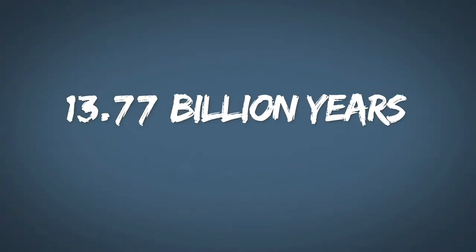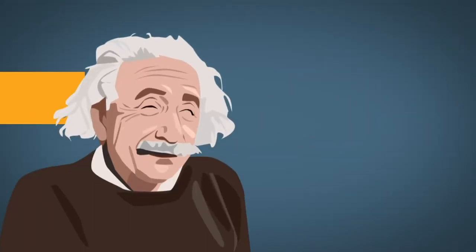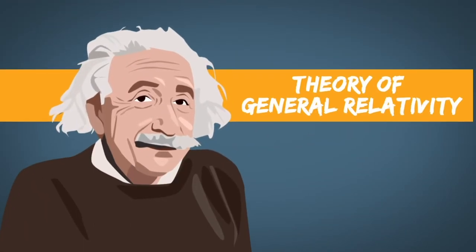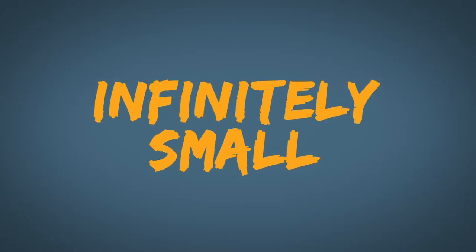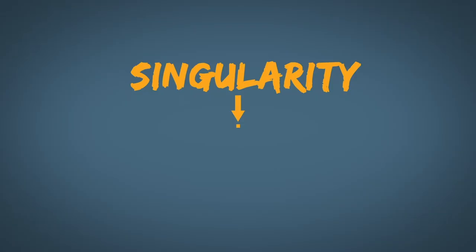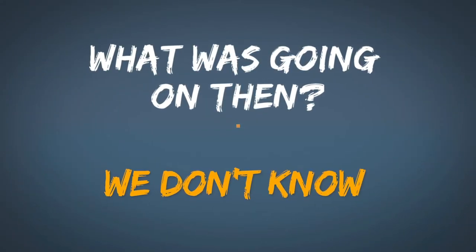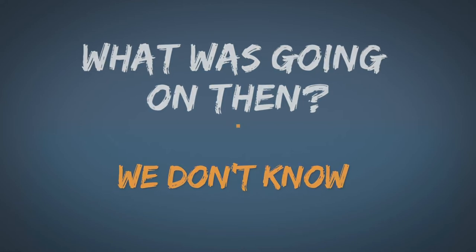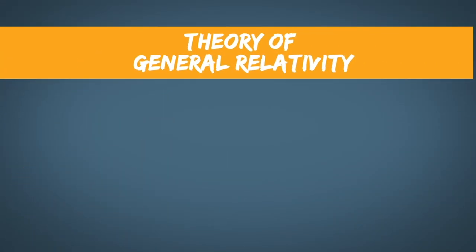But 13.77 billion years since what? Since the beginning? Well, in general relativity, at a certain point, 13.77 billion years ago, it was so small, it was infinitely small. Our entire universe was just an infinitely tiny point, something we call the singularity. But what was actually going on then? We don't know. Because at the singularity at that point, general relativity, which is our model of how we understand this, breaks down.